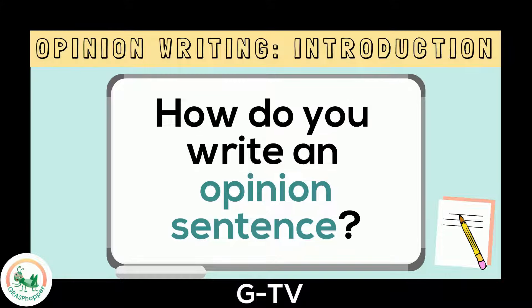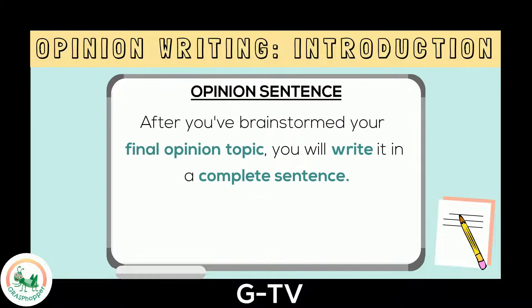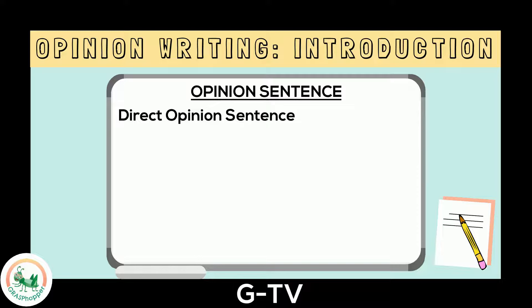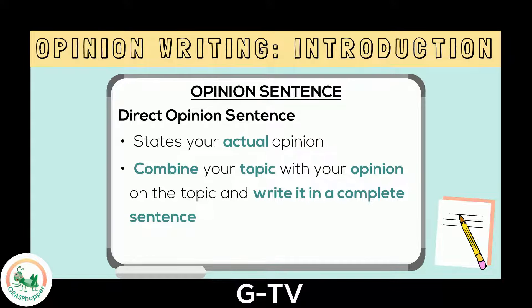How do you write an opinion sentence? After you've brainstormed your final opinion topic, you want to write it in a complete sentence to use in your essay. This is called your opinion sentence. One type of opinion sentence is direct. A direct opinion sentence states your actual opinion. You will combine your topic with your opinion on the topic and write it in a complete sentence, so that a reader knows your exact thought, feeling, or belief on the topic.